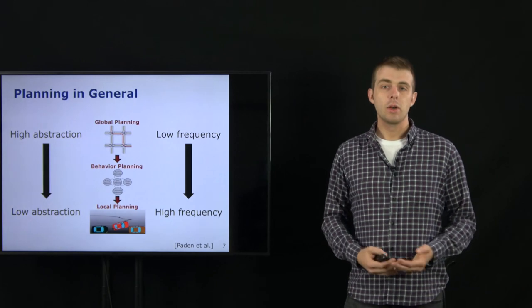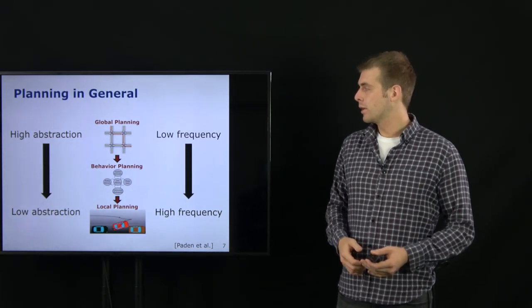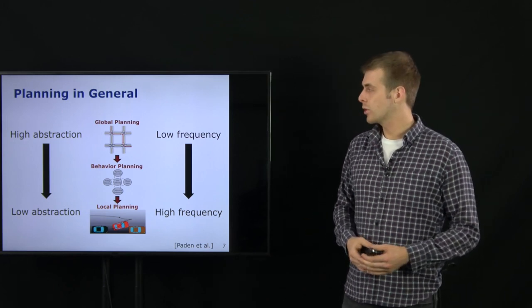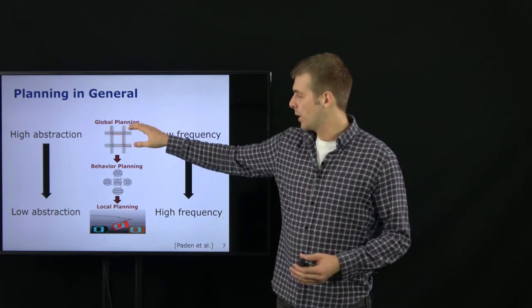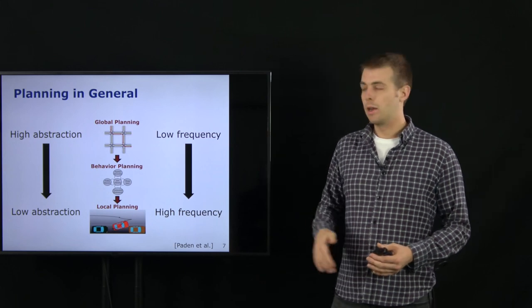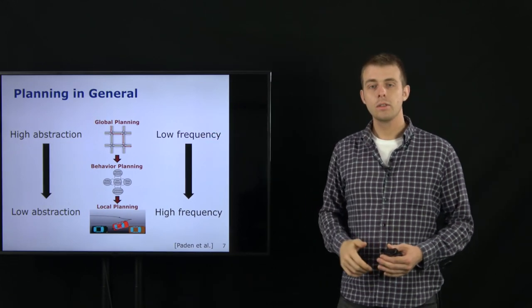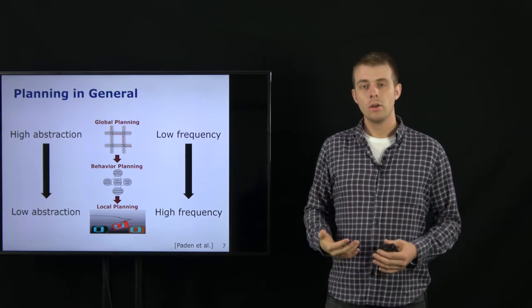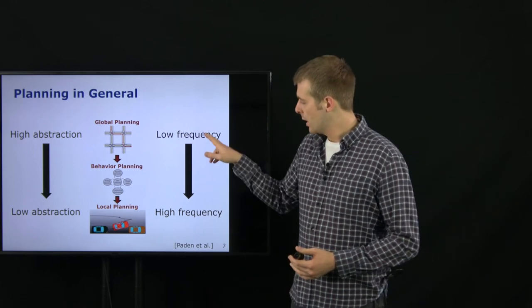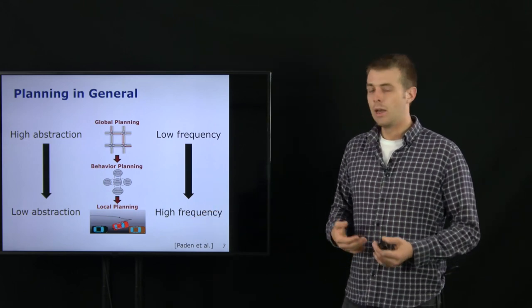Where can we integrate behavior planning into our planning pipeline? Thinking about planning in general, we can divide it into different modules in a hierarchical approach: global planning, behavior planning, and local planning. These different modules have specific and different abstraction levels and update frequencies. At the bottom there is a lower abstraction level and a higher frequency.